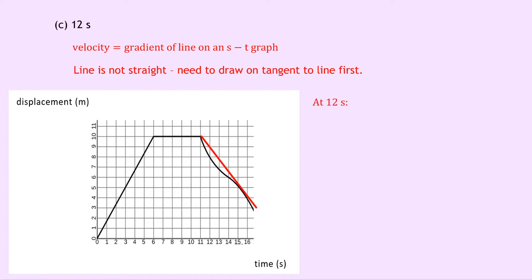So at 12 seconds, choosing two points on that line, we could go for 12 and 9, and then we could go for 16 and 4, which is down this end. So we've got x1, y1 equals 12, 9, and x2, y2 equals 16, 4. Calculating our gradient now, we've got velocity equals the gradient m, which equals the change in y over the change in x, which equals 4 minus 9 divided by 16 minus 12. And this is equal to minus 1.25 meters per second. Notice the negative sign because we've got a negatively sloping gradient.